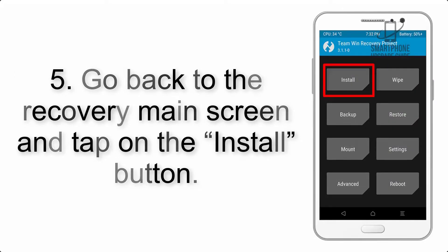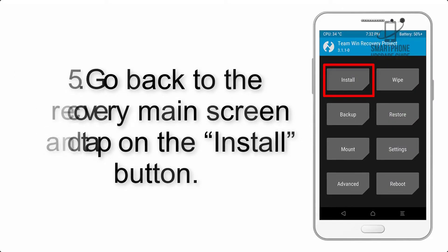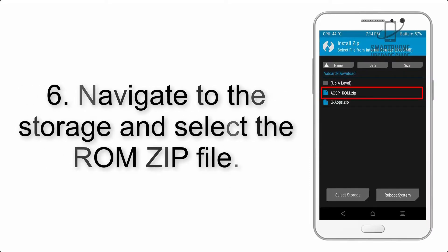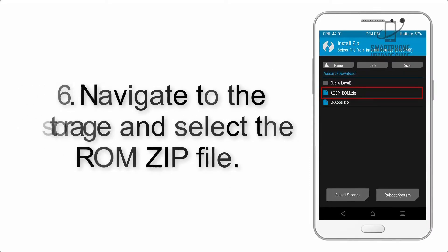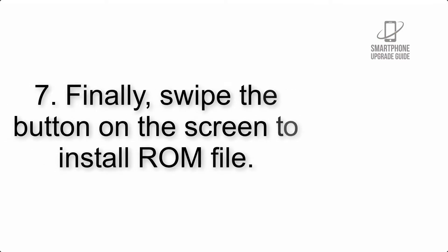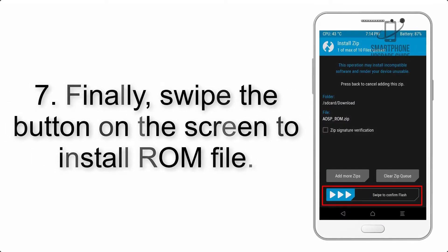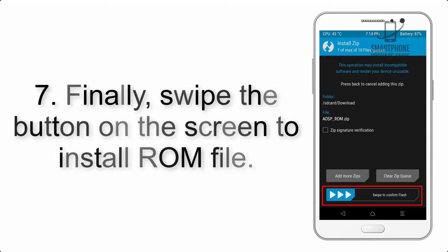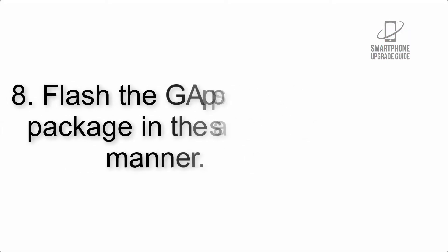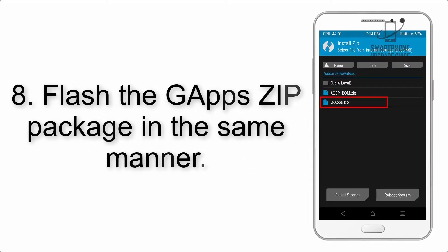Step 5: Go back to the recovery main screen and tap on the Install button. Step 6: Navigate to the storage and select the ROM zip file. Step 7: Finally, swipe the button on the screen to install the ROM file.